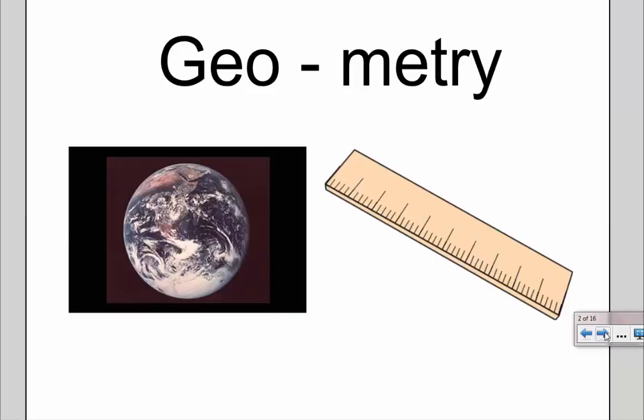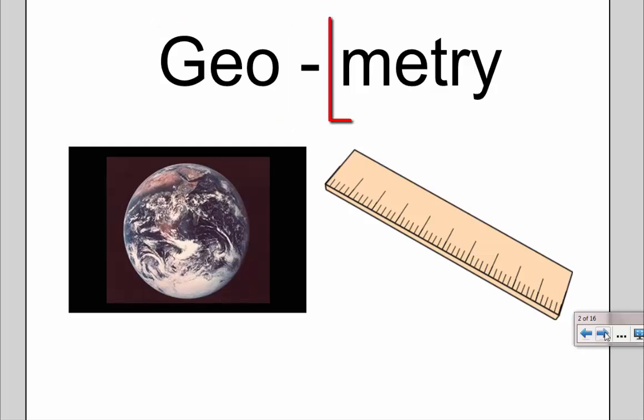The prefix geo, like geology or geography, means 'of the earth.' Metri is Greek for 'measure.' So geometry really just means measuring the earth.